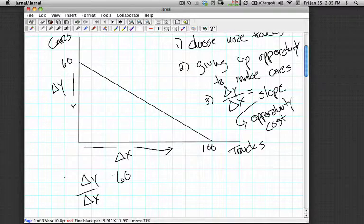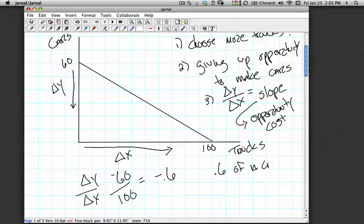They'd have to go from 60 to 0, and at the very same time, that would allow them to now make 100 trucks. In other words, the slope of that line would be negative 0.6. It also tells us that the opportunity cost for this manufacturer is 6 tenths of a car to make one truck.